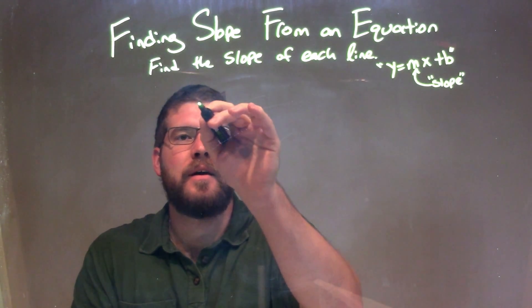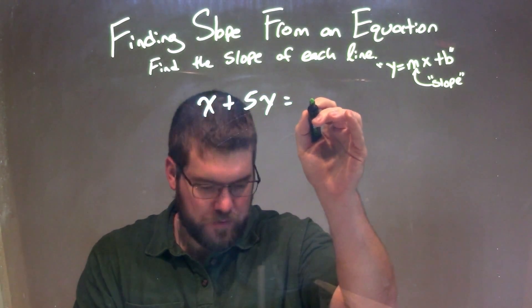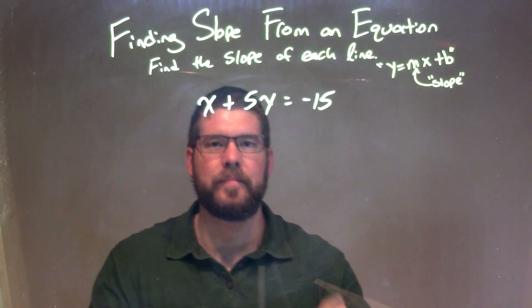We're going to find the slope of each line. So if I was given this equation: x plus 5y equals negative 15.